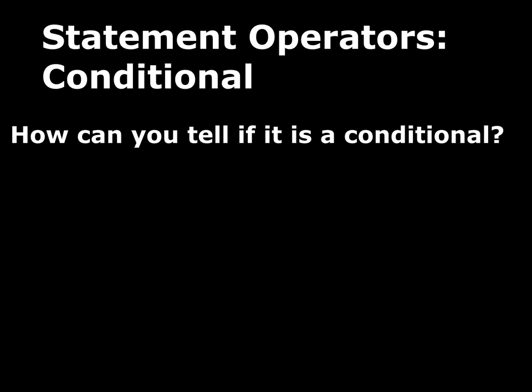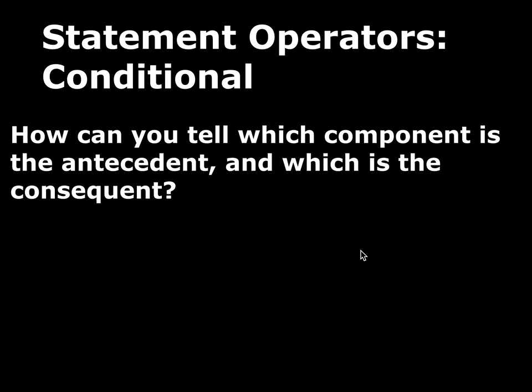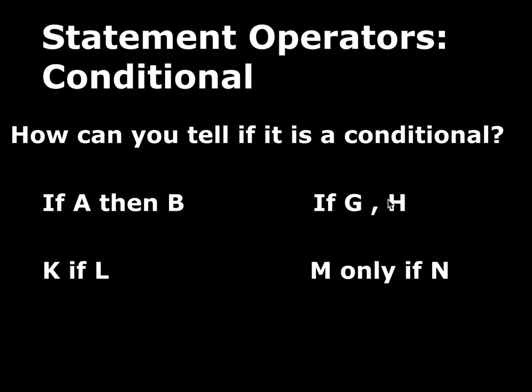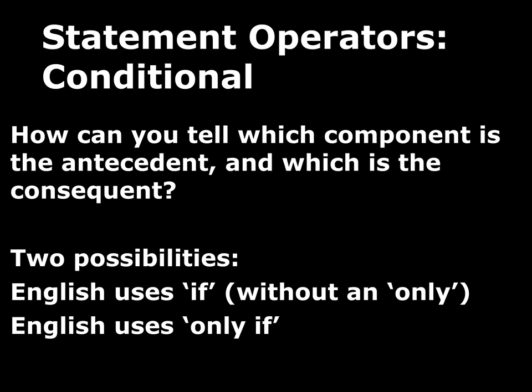So first, how can you tell if it's a conditional? These are the main ways conditionals are expressed, and they all use the word 'if': 'if A then B,' or leaving out the 'then': 'if G, H,' or 'K if L,' or 'only if M, only if N.' So if you see the word 'if,' you know there's a conditional. Next question is: which component — A, B, G, H, K, L, M, N — is the antecedent and which one is the consequent?